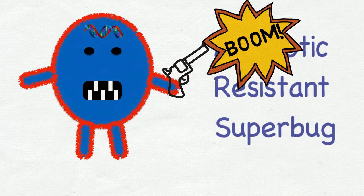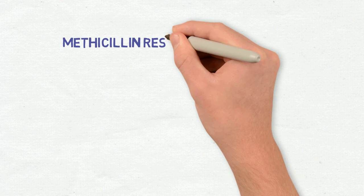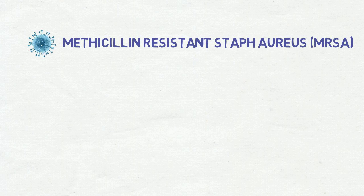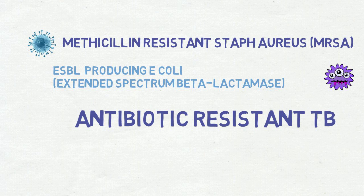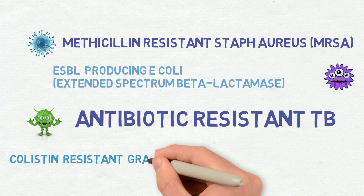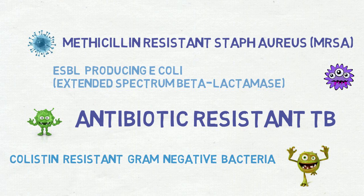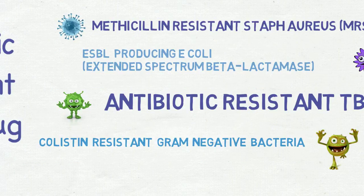There are several examples already of important pathogens which are resistant to multiple antibiotics. For example, you have probably heard of MRSA, or Methicillin-resistant Staphylococcus aureus to give it its full name — the most common hospital superbug. There are also ESBL-producing E. coli's; ESBL stands for extended spectrum beta-lactamase. There are antibiotic resistant strains of TB in humans. And more recently reported, colistin-resistant gram-negative bacteria such as Klebsiella and E. coli. Colistin was one of the last antibiotics available against which there was little known resistance in gram-negative bacteria.